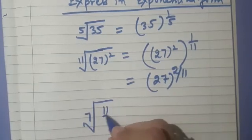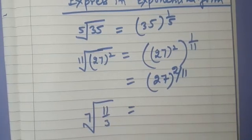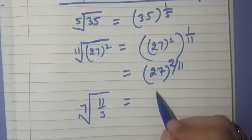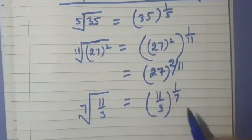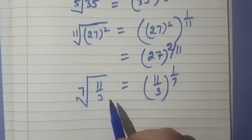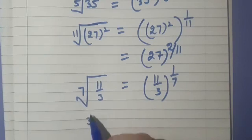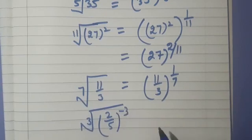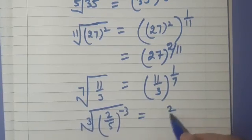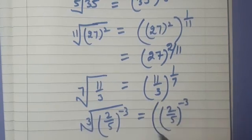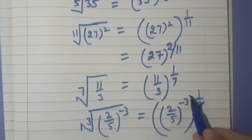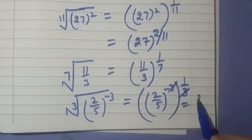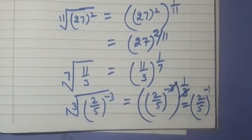The 7th root of 11 by 3 is written as 11 by 3 raised to the power 1 by 7. And cube root of (2 upon 5) raised to the power minus 3: we write it as (2 upon 5)^(−3) raised to the power 1 by 3 — the 3s cancel — giving us 2 upon 5 raised to the power minus 1.